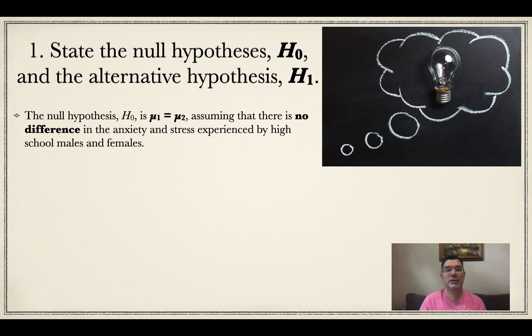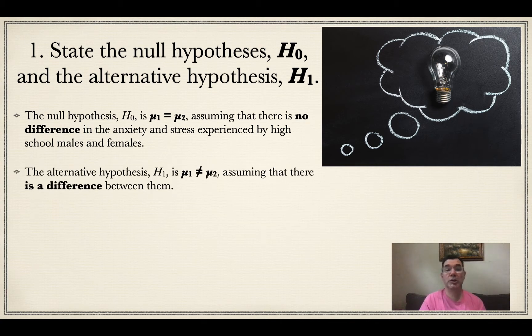So my null hypothesis is going to be that mu1 is going to equal mu2. In other words, there's really no difference between the average anxiety and stress experienced by high school males and high school females. So the alternative hypothesis is just the opposite of that, that they are not equal. Whether one is less or one is greater, I'm just saying that the alternative hypothesis is that they are not the same.